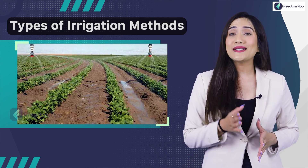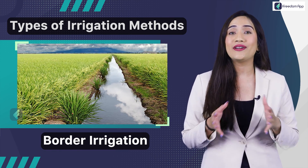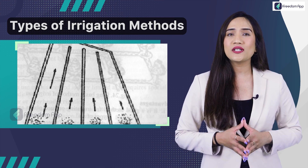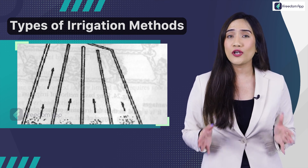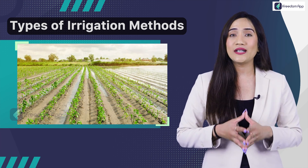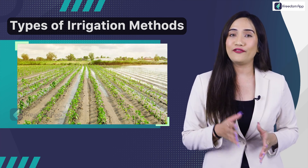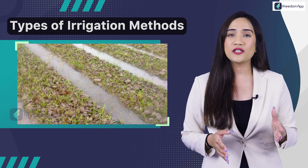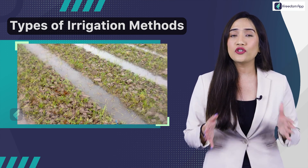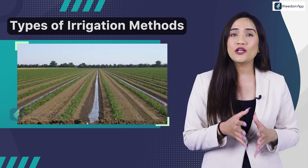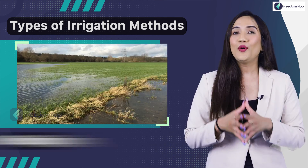Furrow irrigation is one of the oldest systems of irrigation. Border irrigation is a type of surface irrigation where the field is divided into strips separated by borders or ridges running down the gradient of the field. The area between the ridges is flooded during irrigation, and it can be viewed as an extension of basin irrigation to include long rectangular or contoured field shapes.